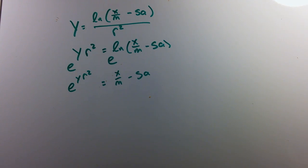So now we're left with e to the y r squared power equals x over m minus s times a.